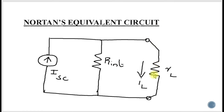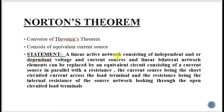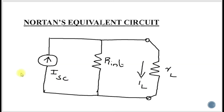We have also connected load resistance RL. The current source is the short circuit current across the load terminal and the resistance is the internal resistance. You have to calculate R internal, the short circuit current across the short circuit terminals, and then connect load resistor RL.